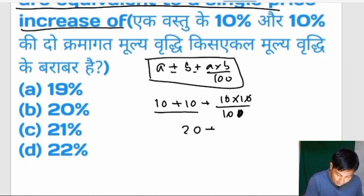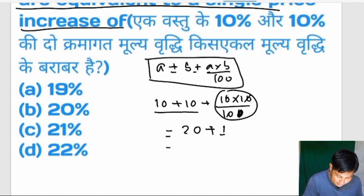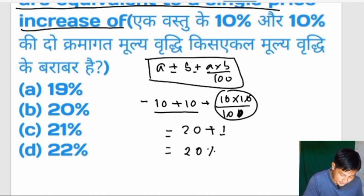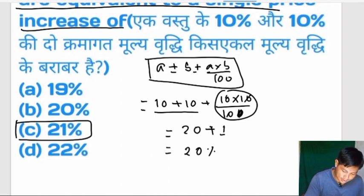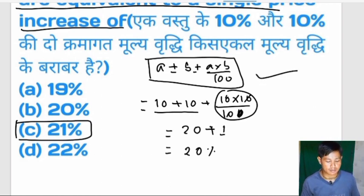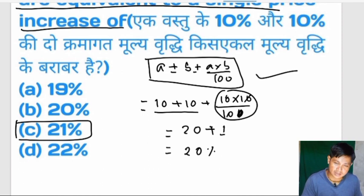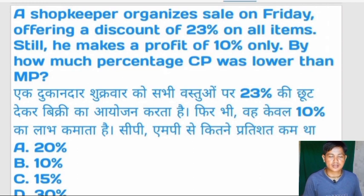When a hundred dollars — in the case of successive discount, twenty-one percent is the result. This supports the option. There is a next question to look at — a next question on discount, profit and loss.